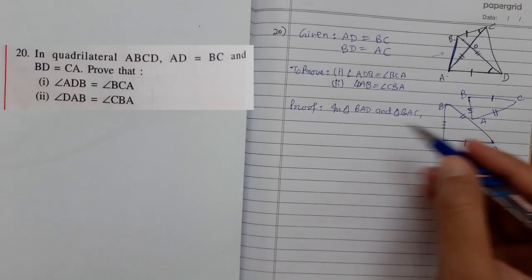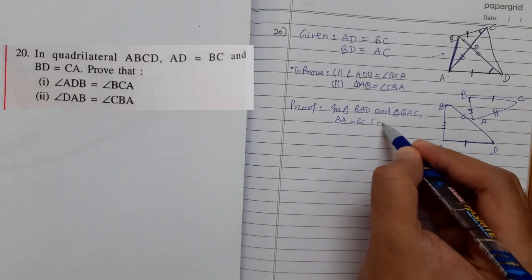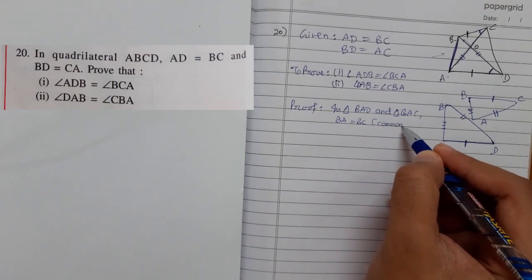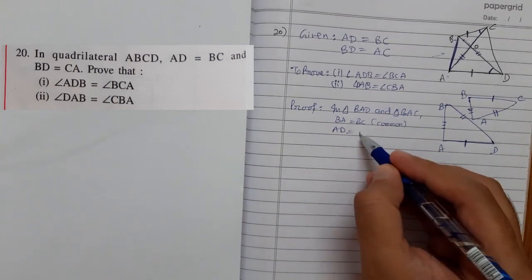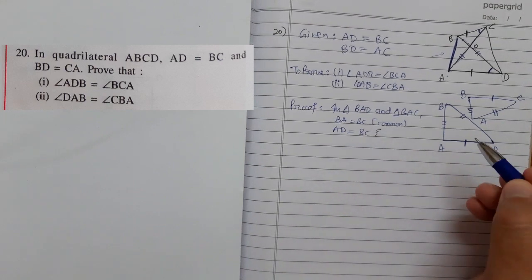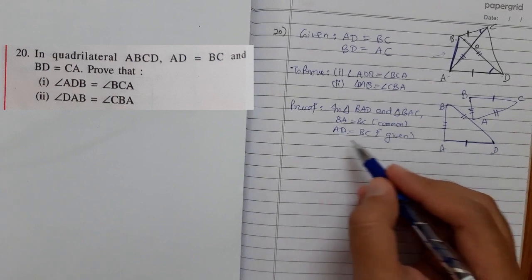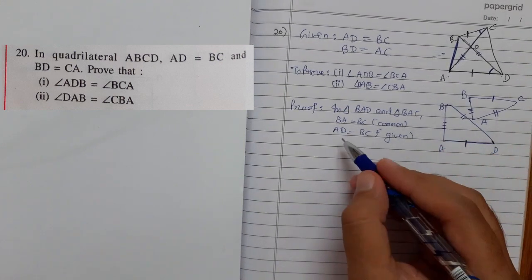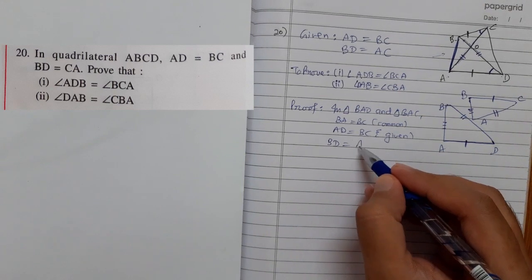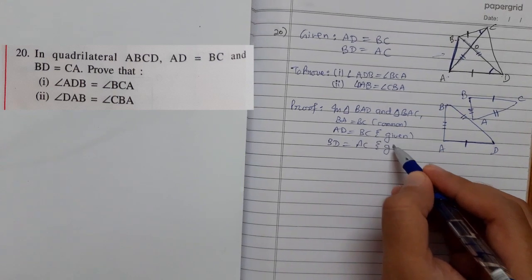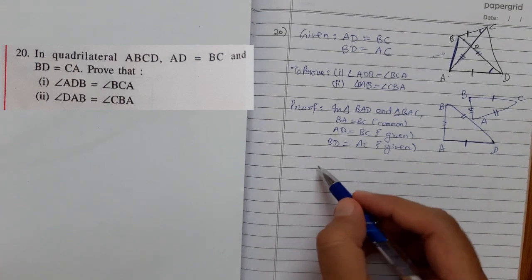Let's prove it quickly. In triangle BAD and triangle BAC, first thing is BA equals BA common. Second thing is AD equals BC which is given. Third thing is BD equals AC which is also given.